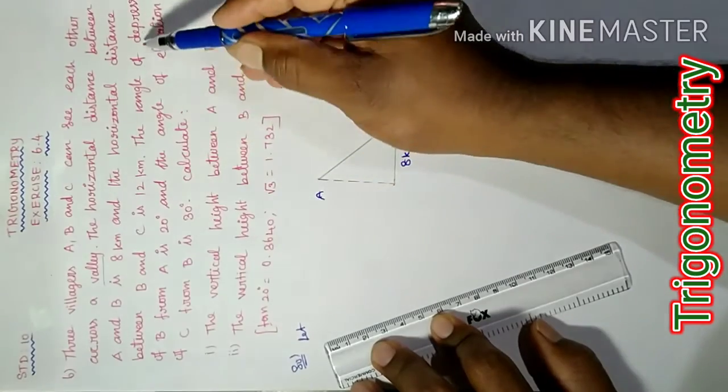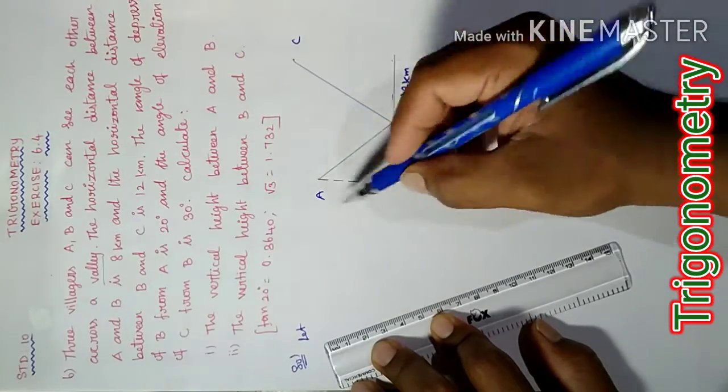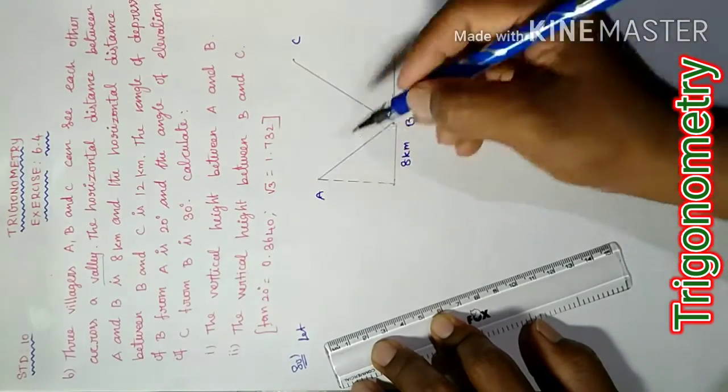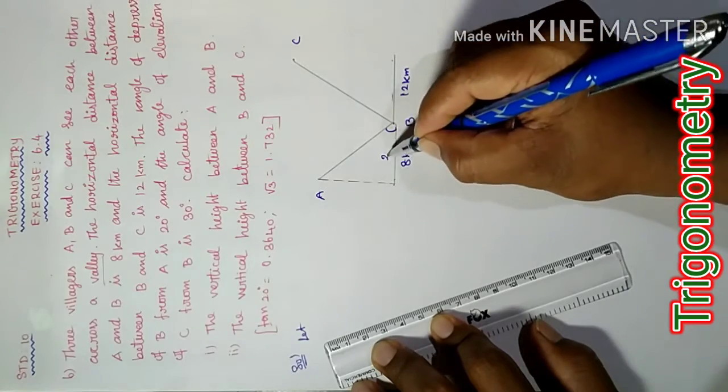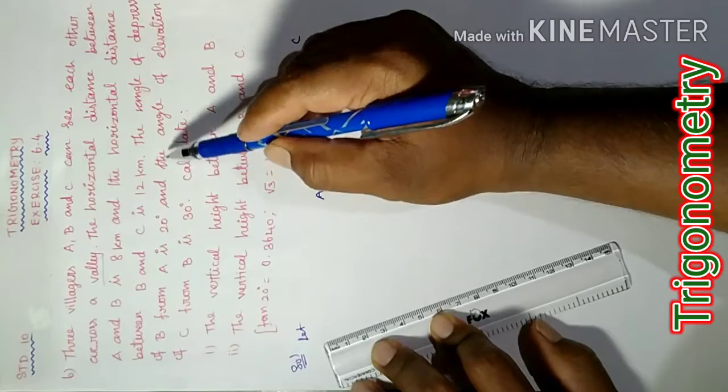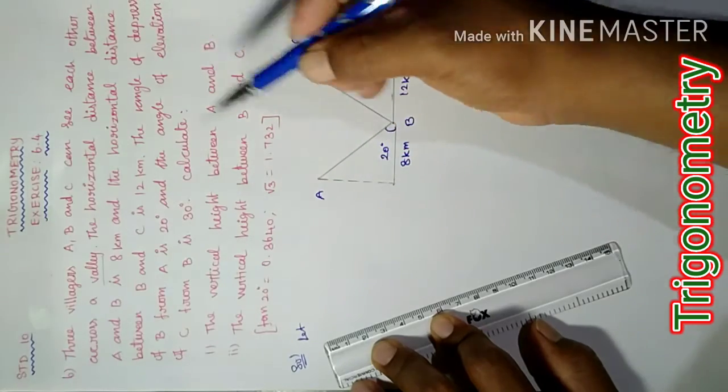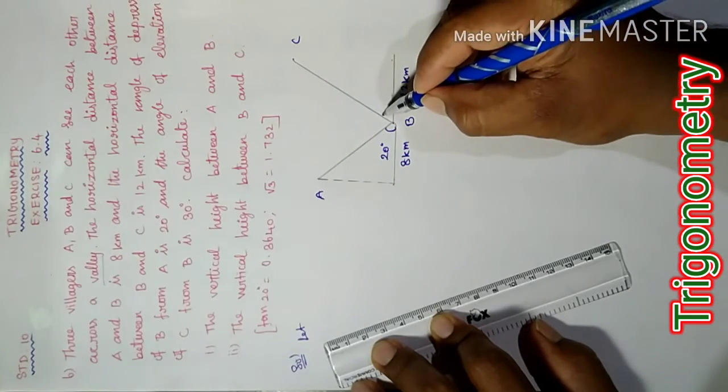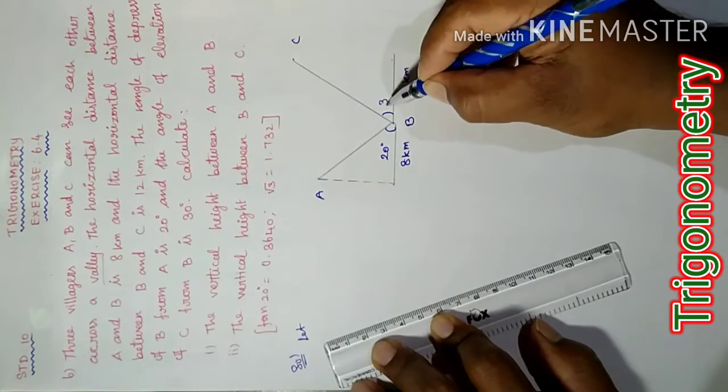The angle of depression from A to B is 20 degrees. Next, and the angle of elevation from B to C, BC value equal to 30 degrees.